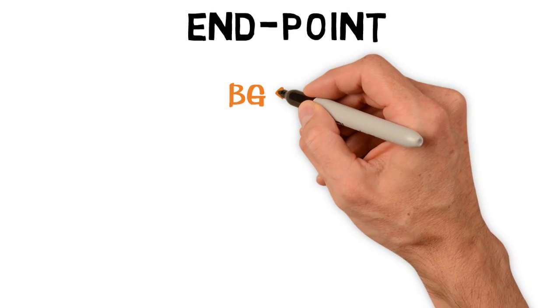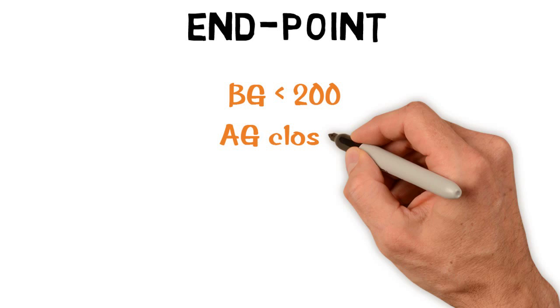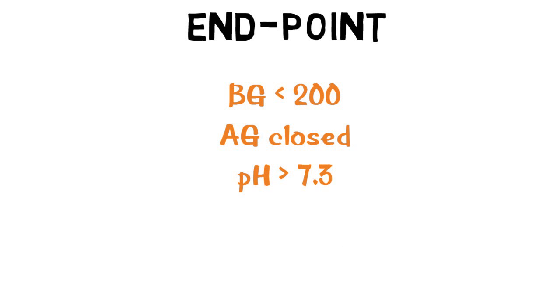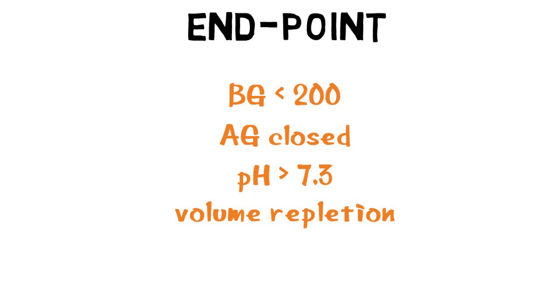Insulin and IV fluid replacement are continued until hyperglycemia has resolved, anion gap is closed, pH is normalized, and the fluid deficit has been replaced.